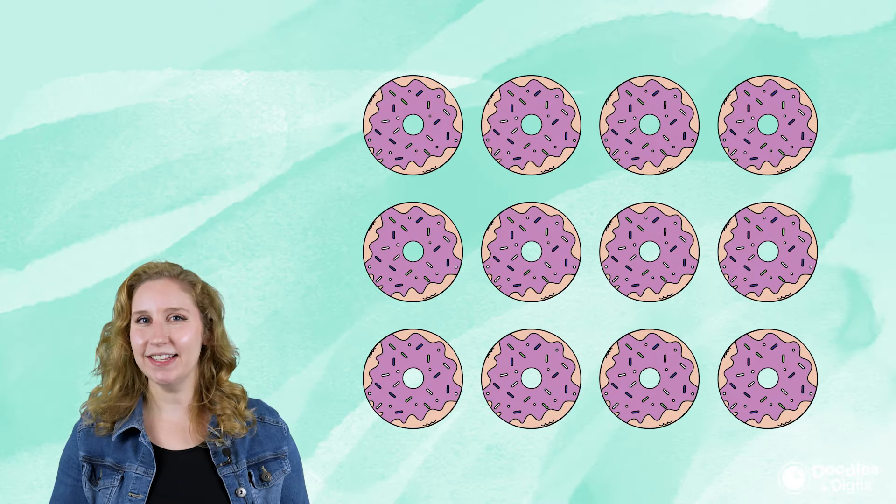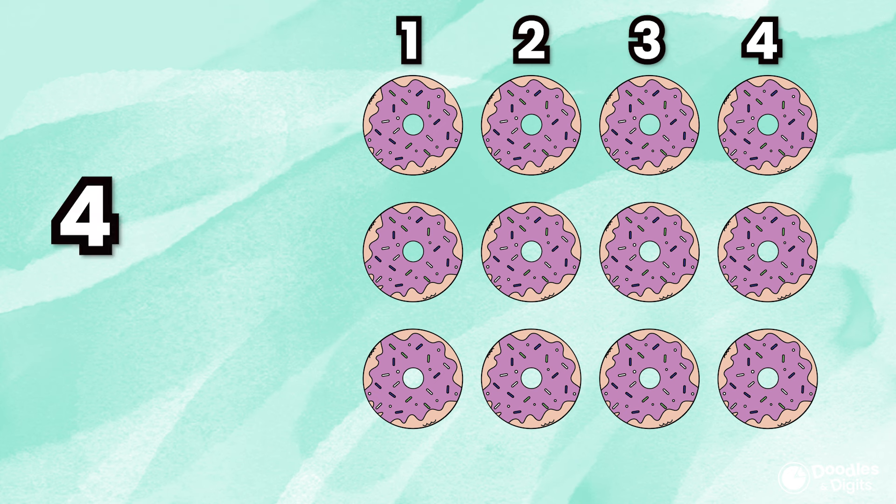Alright, let's try a few together. Let's see if you can figure out what this array is showing. What multiplication problem is this array showing? First, I'm going to count how many columns we have. We have 4 columns.